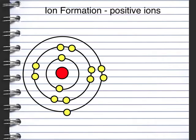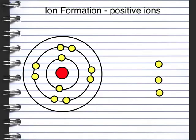If we go one step further where we've got three electrons in the outer shell, we can lose those three electrons. So we've lost three electrons and we end up with a plus 3 charge. Because we've lost three electrons, we're likely to be in group 3.